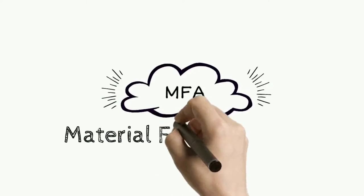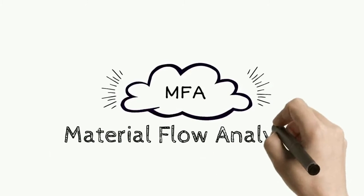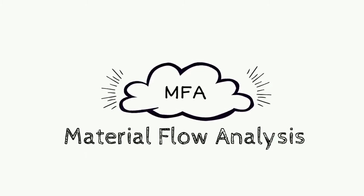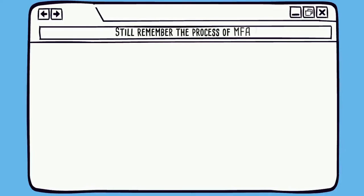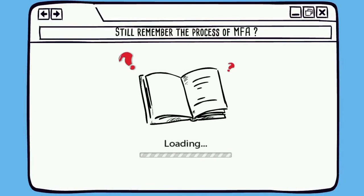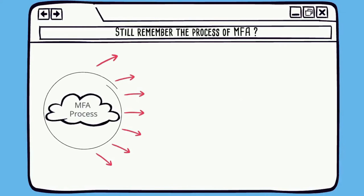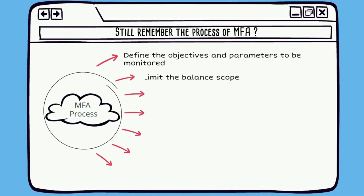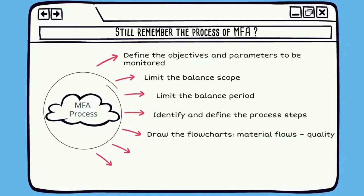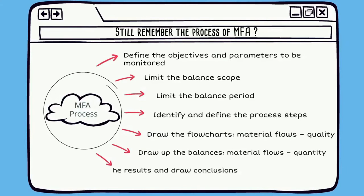Let's talk about material flow analysis, also known as MFA. The process involved in MFA includes: define the objectives and parameters, limit the balance scope, limit balance period, identify and define the process steps, draw flowcharts, draw up the balances, and interpret the results and draw conclusions.